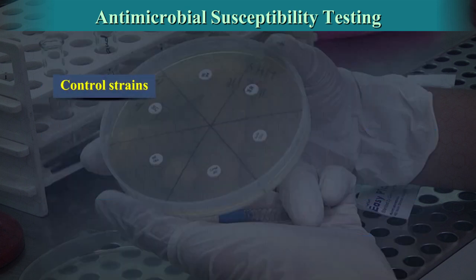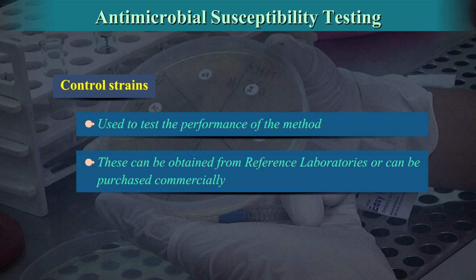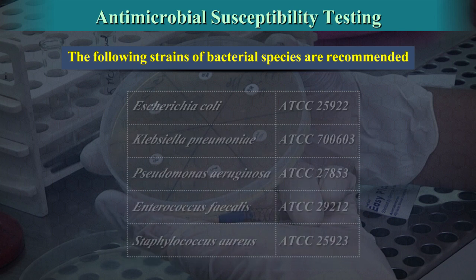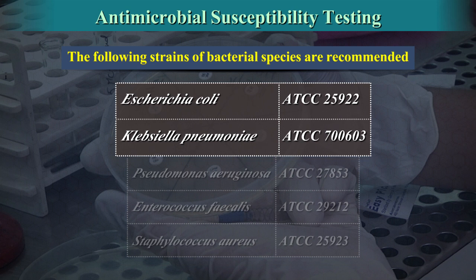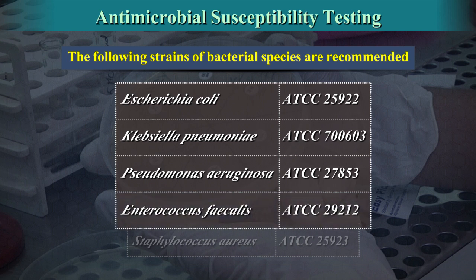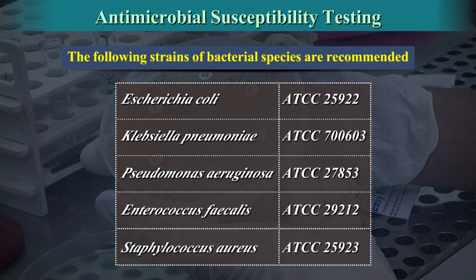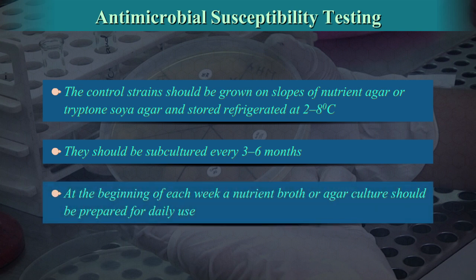Control strains are used to test the performance of the method. These can be obtained from reference laboratories or can be purchased commercially. The control strains should be grown on slopes of nutrient agar or tryptone soya agar and stored refrigerated at 2 to 8 degrees centigrade. They should be subcultured every 3 to 6 months. At the beginning of each week, a nutrient broth or agar culture should be prepared for daily use.